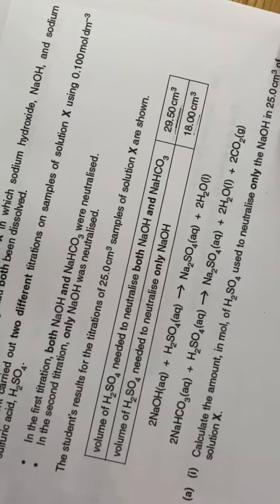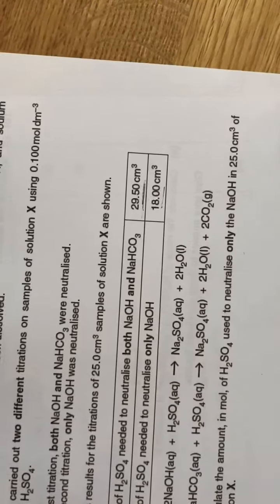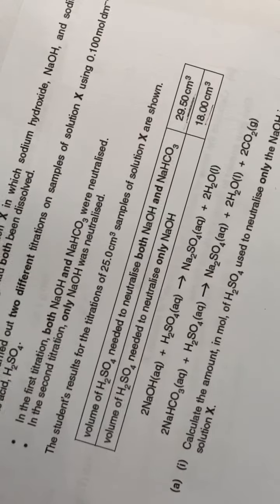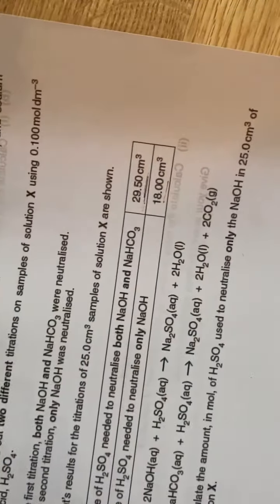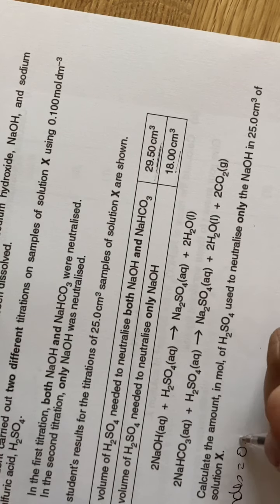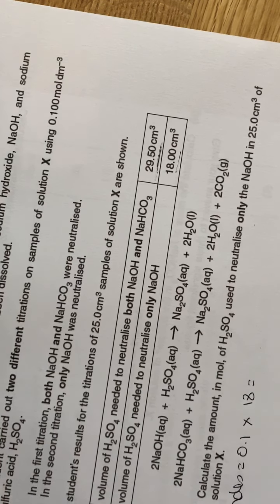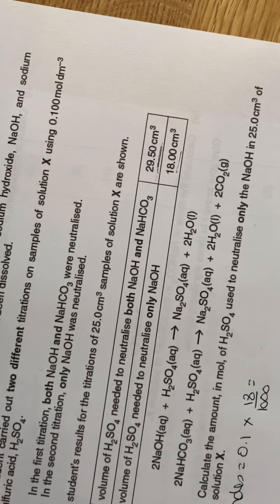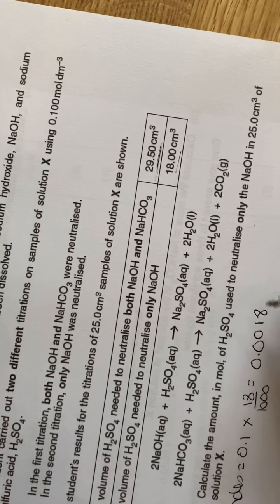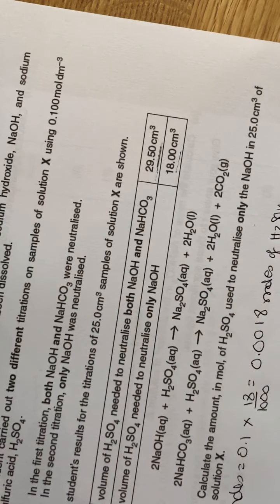Question one: calculate the amount in moles of sulfuric acid used to neutralize only the sodium hydroxide in solution X. You start by working out: moles = 0.1 × 18 ÷ 1000, which gives 0.0018 moles of H₂SO₄ used to neutralize the sodium hydroxide.